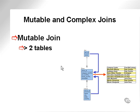Mutable and complex joins. As we've discussed previously, a mutable join is a join of more than two tables. Multi-table, mutable, subject to change, etc.